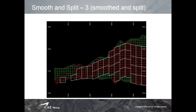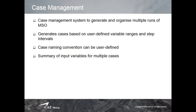In the last example, the splitting option is shown: if the stope was too big, the system splits it into two or three different stopes. There will also be a new case management system allowing users to manage different runs with much more flexibility, including different naming conventions and different ranges and intervals.